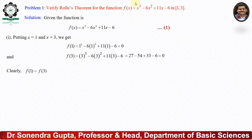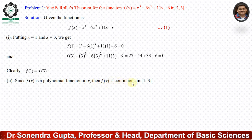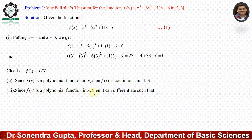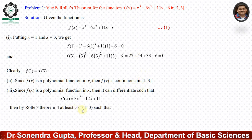The second condition: f(x) is a polynomial function, and every polynomial function is continuous in the closed interval [1, 3]. Since f(x) is a polynomial function it can be differentiated easily, giving f'(x) = 3x² − 12x + 11. Now we suppose a value c in the open interval (1, 3) such that f'(c) = 0, which means 3c² − 12c + 11 = 0. This is a quadratic equation and we can find the value of c using the quadratic formula.